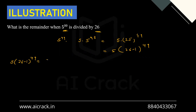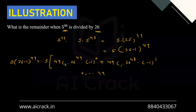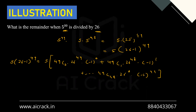So we have 5·(26-1)^49, and expanding this gives 5 times [49C0·26^49·(-1)^0 + 49C1·26^48·(-1)^1 + ... + 49C49·26^0·(-1)^49]. Except for the last term, every other term contains a factor of 26, since they each have 26 raised to at least the power of 1.